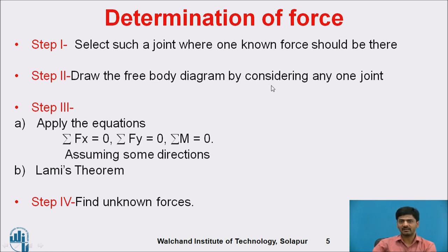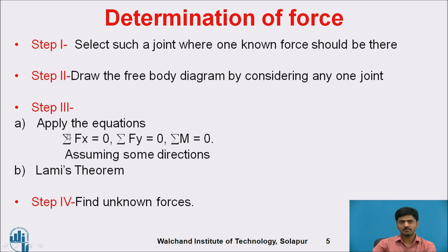Step two: draw the free body diagram by considering any one joint. Consider any one joint and draw the free body diagram for that particular joint. Keep in mind the external forces and reactions — mention them as they are — and for the remaining unknown members, assume tensile nature. Step three: apply the static equilibrium equations — summation Fx = 0, summation Fy = 0, and summation M = 0. The sign convention: all right-hand side forces, upward forces, and clockwise rotary effects are positive; downward forces, left-hand side forces, and anti-clockwise rotary effects are negative. Similarly, we apply Lami's theorem. The last step is to find the unknown forces.